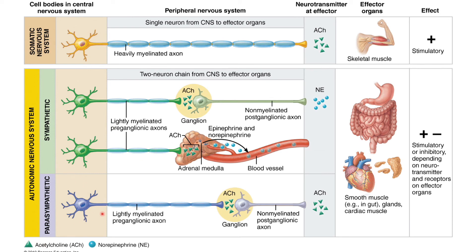In the parasympathetic nervous system, the cell body is in the CNS and projects into the PNS. The pre-ganglionic axon is lightly myelinated and releases acetylcholine — it is cholinergic. At the ganglion synapse, it communicates onto the post-ganglionic axon, which in this case also releases acetylcholine. So in the parasympathetic nervous system, both the pre-ganglionic and post-ganglionic neurons are cholinergic.